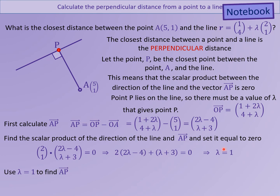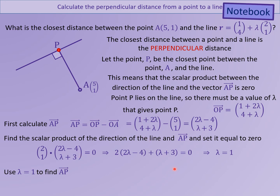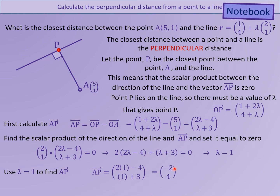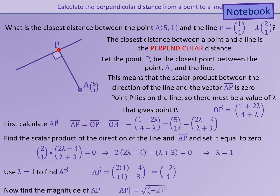However, we are not really trying to find point P — we are trying to find the distance from A to P. So we substitute lambda equals 1 into the vector we already found for AP. This gives us the vector (-2, 4). We can then find the magnitude of AP, which represents the distance between the point and the line. The magnitude of AP is the square root of 20, which matches the value we found earlier by inspection.